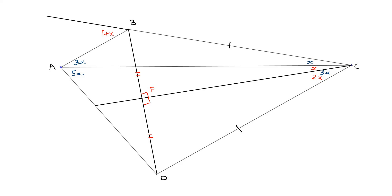Let's label the intersection point G. Angle CGD is going to equal 6x. The reason is that here we have 5x and here we have x, so the exterior angle at G equals 5x plus x, giving us 6x. That of course means angle AGC is 180 minus 6x by the angle sum of the triangle.